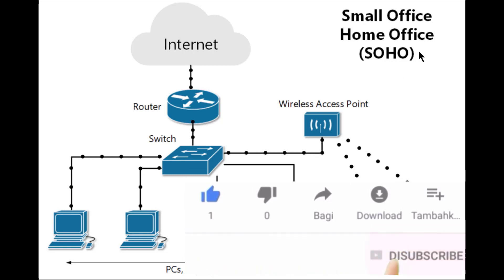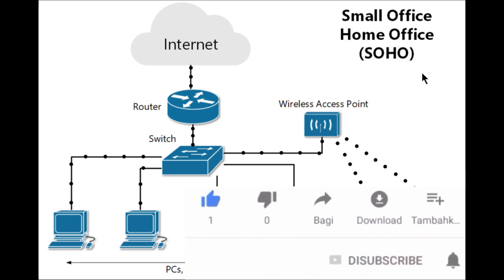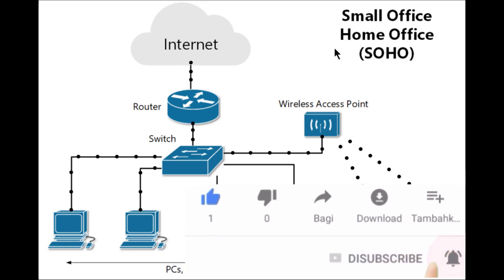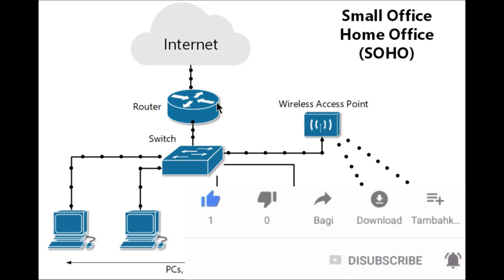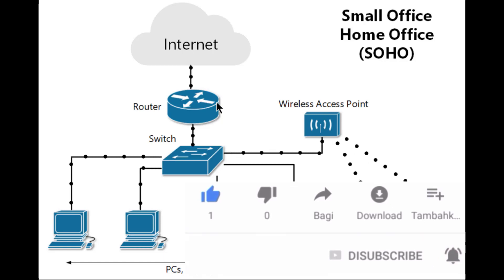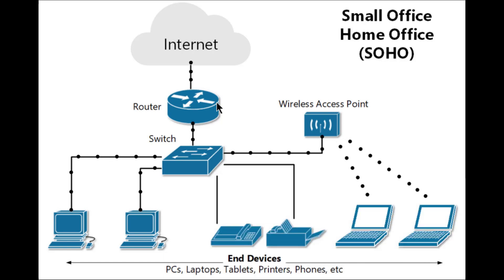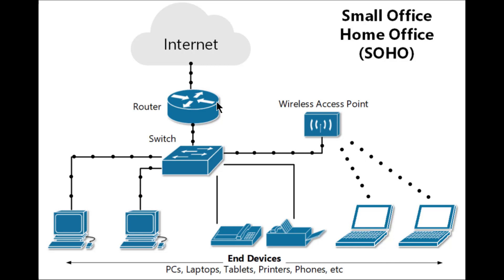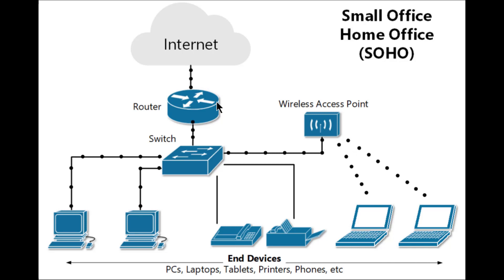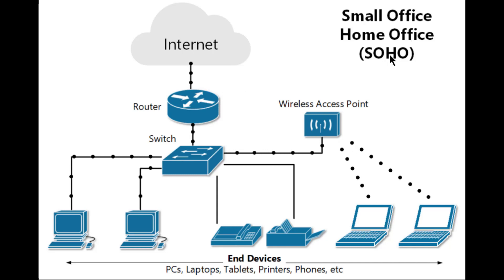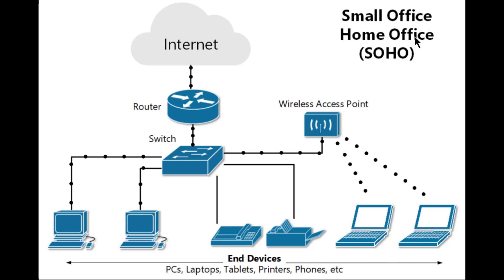Let's proceed. SOHO simply stands for Small Office Home Office. As you can find, S stands for Small, O stands for Office, H stands for Home, and O stands for Office. So SOHO is just an acronym, and it's a kind of local area network.